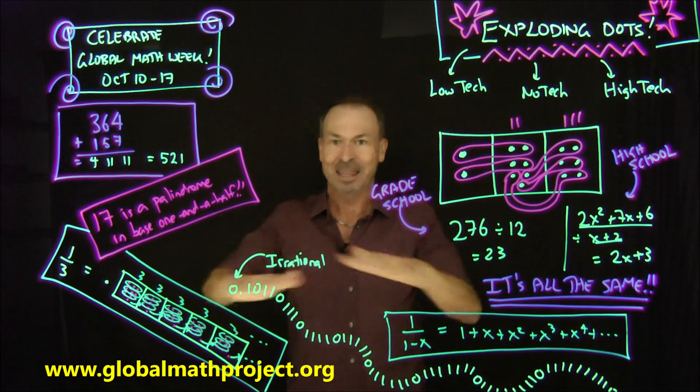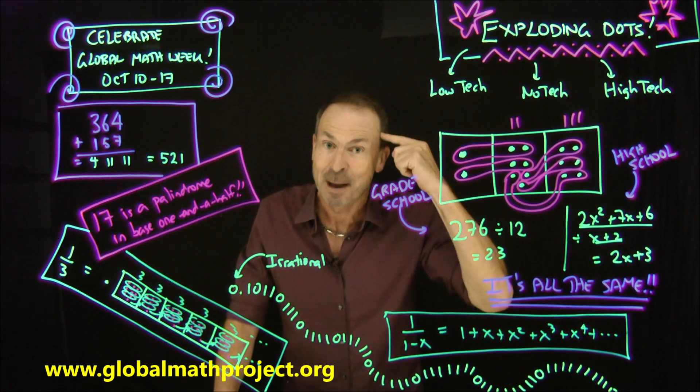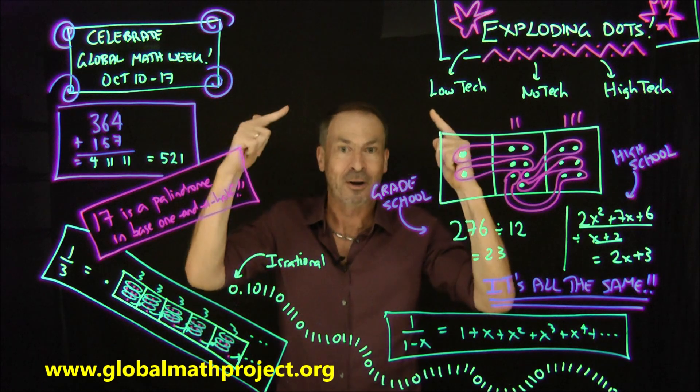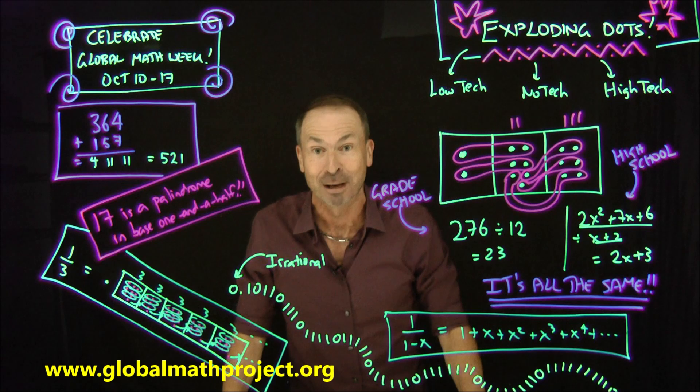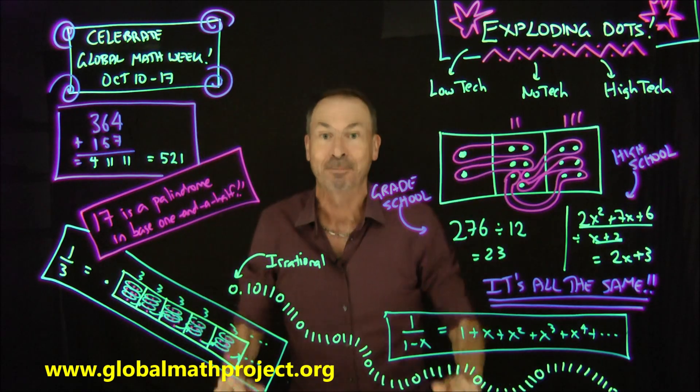It all begins by assuming we know nothing, and it starts by how we think about and how we write numbers. In fact, not only that, we start to draw representation of numbers, and as soon as you start drawing pictures, everything falls into place. All becomes connected. All makes perfect sense.